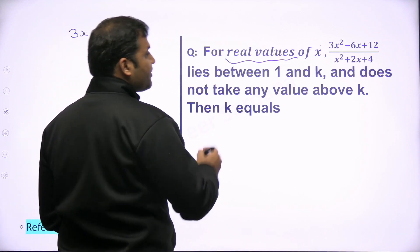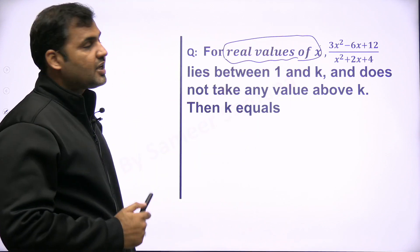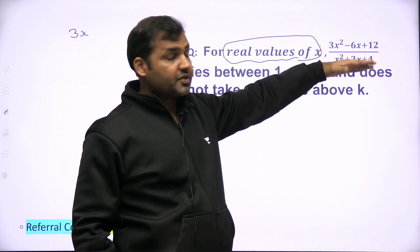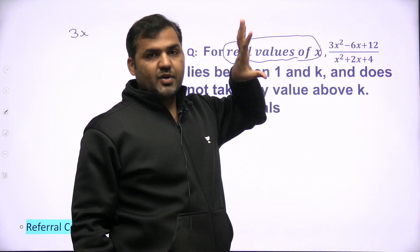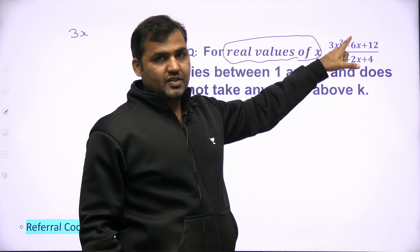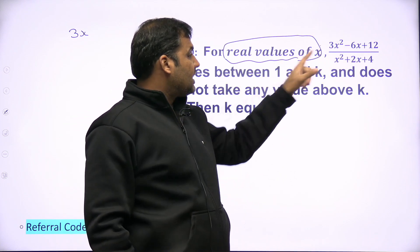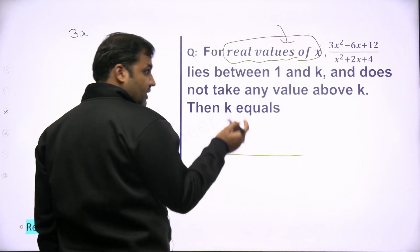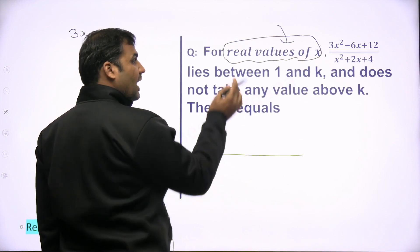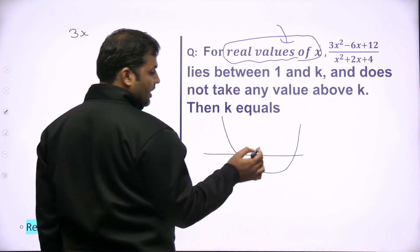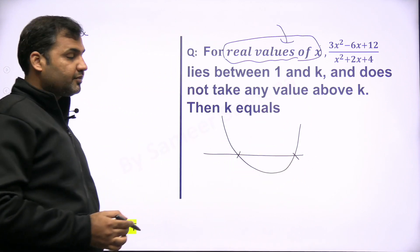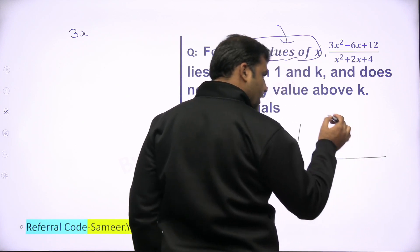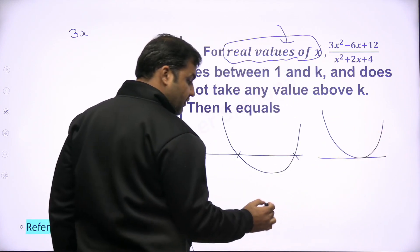So what is the way to solve this question? You have to use this information for real values of x. Here, these quadratic equations are given to you in terms of x. If somehow I convert this expression, whole expression, in terms of x as a quadratic equation only, then I will be able to use this concept that x is a real number. Because in a quadratic equation, if a quadratic equation in terms of x is given to you and x is a real number, that means the graph of that equation will definitely cut the x-axis at two different points.